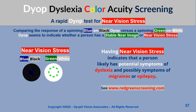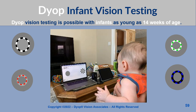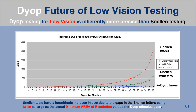Having near vision stress indicates that a person likely has potential symptoms of dyslexia and possibly symptoms of migraines or epilepsy. The dyop color screening test with a blue on black versus a green on white spinning dyop has a 90% correlation for diagnosed symptoms of dyslexia. Dyop vision testing is also possible with infants as young as 14 weeks of age. Dyop testing for large groups may be done easily and rapidly by comparing the dyop diameter where spinning is first detected versus the dyop viewing distance. Dyop testing for low vision is inherently more precise than Snellen testing because the dyop test doesn't have the bloated logarithmic curve of a Snellen test.